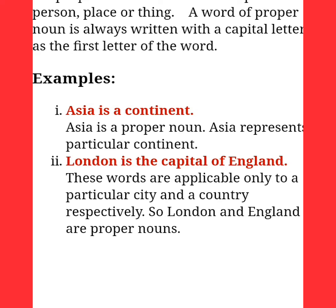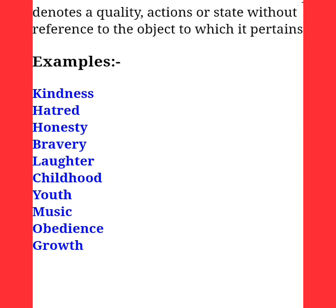A proper noun is a name of a particular person, place, or thing, and is always written with a capital letter. For example, Asia is a proper noun because it represents a particular continent. London and England are proper nouns because these words apply only to a particular city and country.